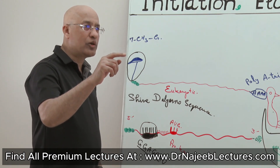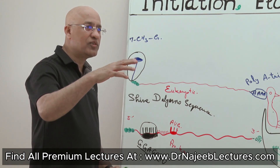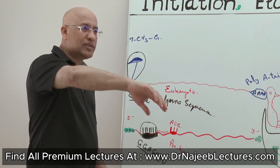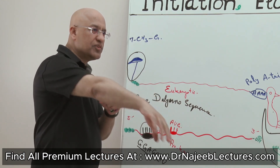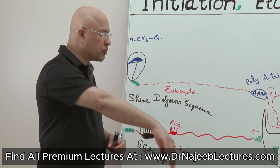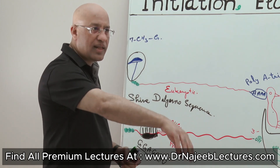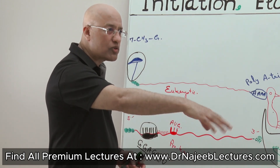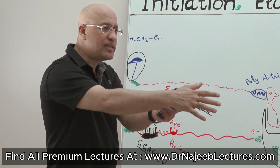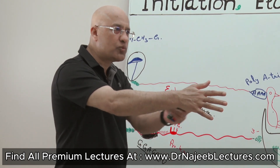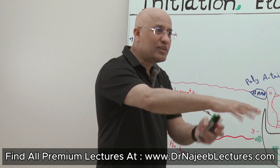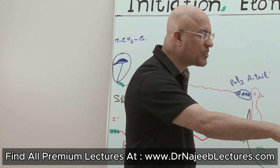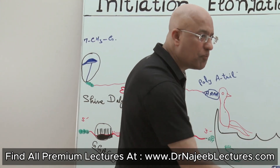When prokaryotic messenger RNA is made, this messenger RNA comes into the cytosol. And in the cytosol, the Shine-Dalgarno sequence is looking for a special point where it will bind.